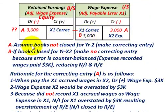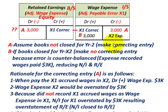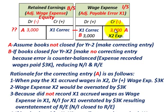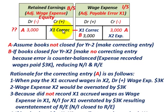For case A, assume the books are not closed for year X2. We're going to make a correcting entry for the year X1 error. We credit or reduce our wage expense by $3,000 — that amount we didn't record in year X1 — and then debit or reduce our retained earnings by $3,000. That is the correction we make when the books are not closed.